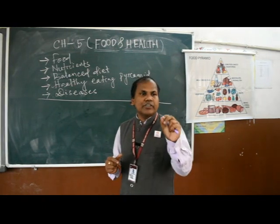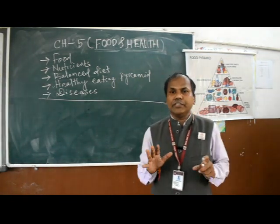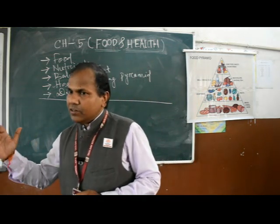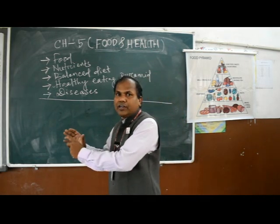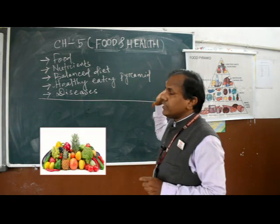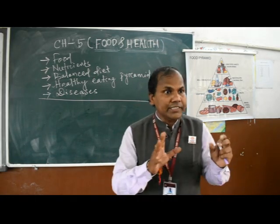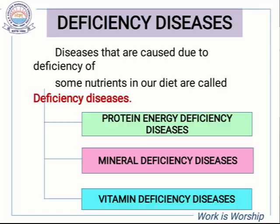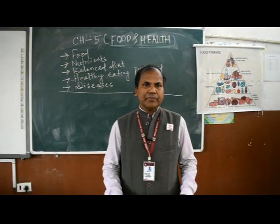Generally we suffer from two types of diseases: one type is caused by disease-causing germs, and another type is due to lack of nutrients in our diet. In this chapter — Food and Health — we will discuss only diseases caused due to lack of nutrients such as carbohydrates, proteins, fats, vitamins, and minerals.